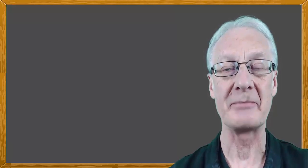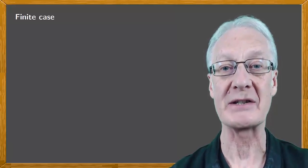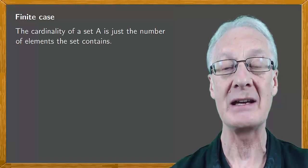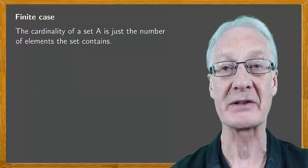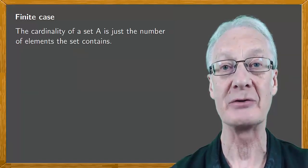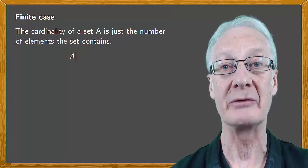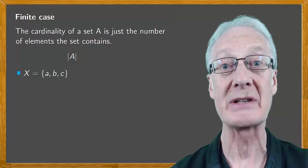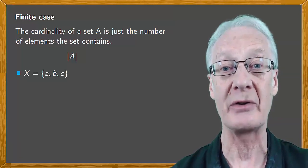What is cardinality? In the case of finite sets, it's very straightforward. The cardinality of a set A is just the number of elements the set contains, and it's denoted by A between vertical bars. For example, the set X equal to ABC has three elements, so we say that X has a cardinality of three.